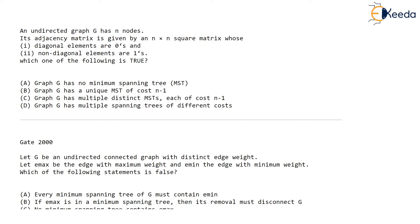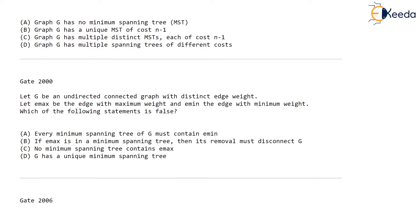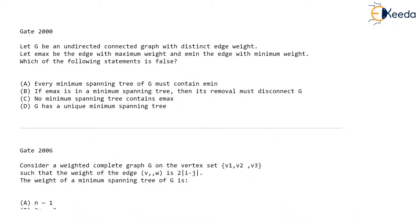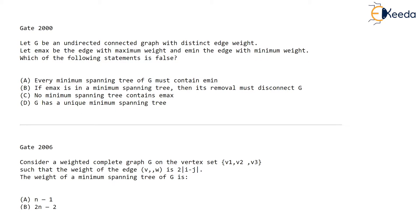Now let's see the GATE 2000 question. In GATE 2000, the question asked: let G be an undirected connected graph. By connected graph, what we mean is not necessarily complete. Connected graph means there is only one connected component in the graph.